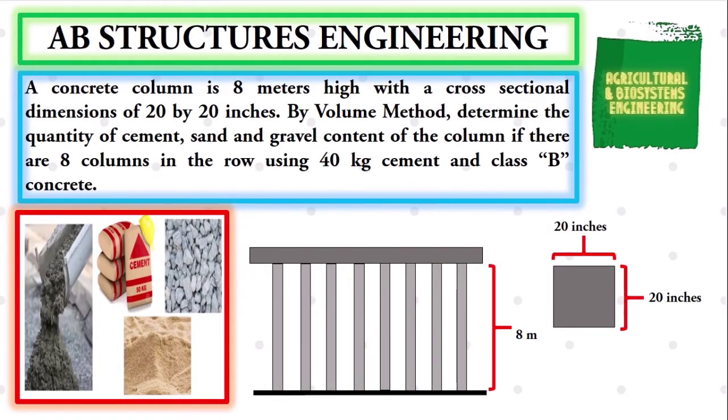A concrete column is 8 meters high with a cross sectional dimensions of 20 by 20 inches. By volume method, determine the quantity of cement, sand and gravel content of the column if there are 8 columns in the row using 40 kg cement and class B concrete.